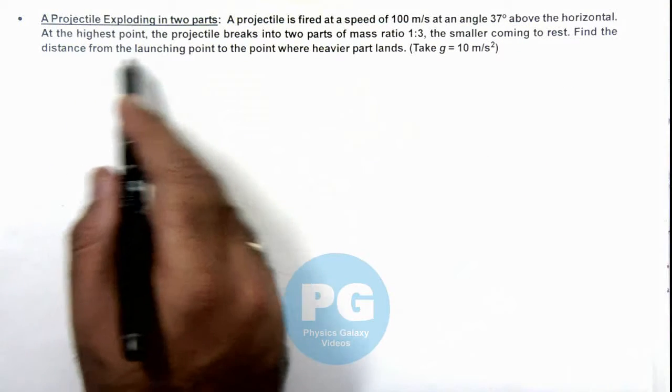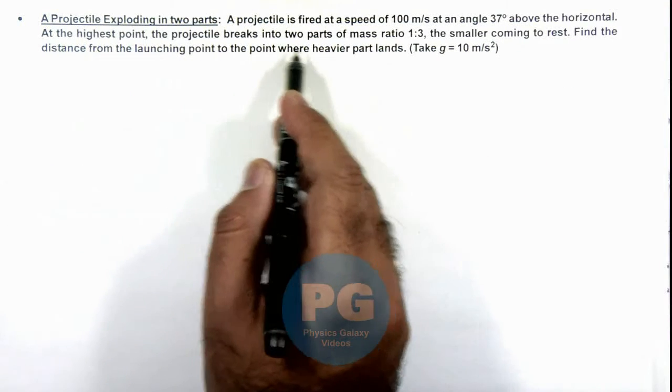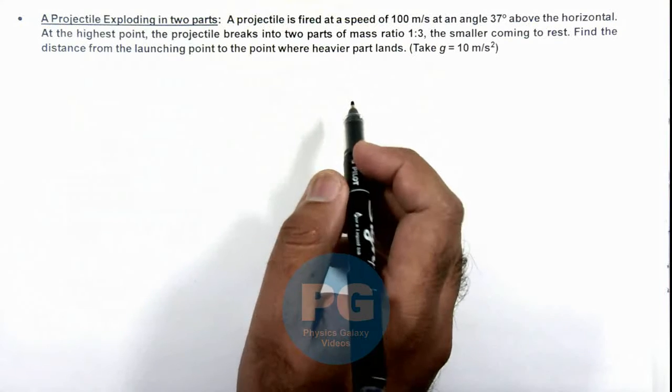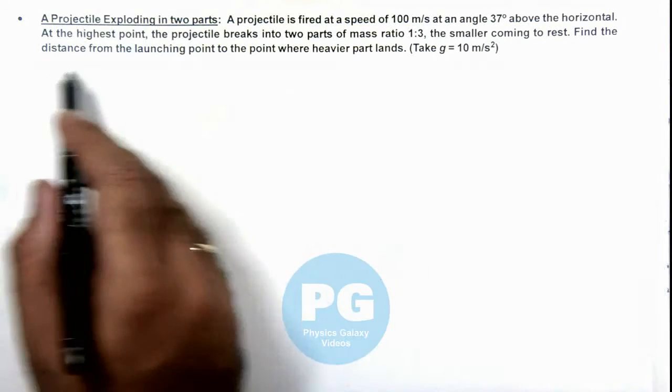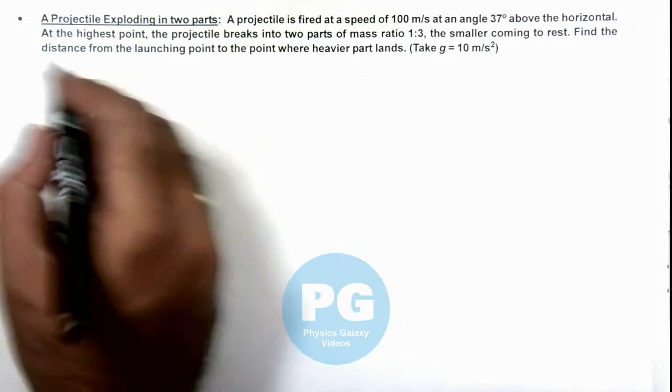And at the highest point the projectile breaks into 2 parts of mass ratio 1 is to 3, and the smaller coming to rest. And we are required to find the distance from the launching point to the point where heavier part lands.